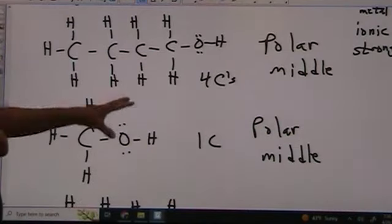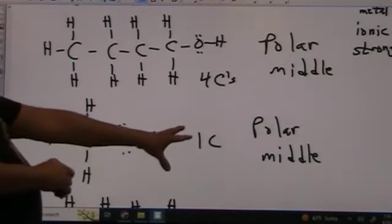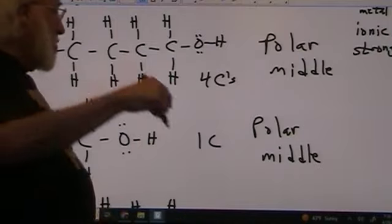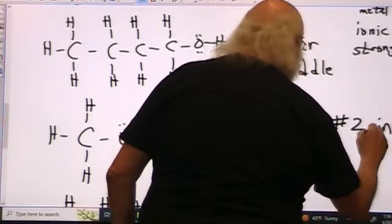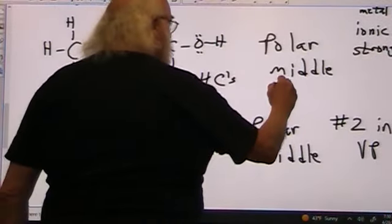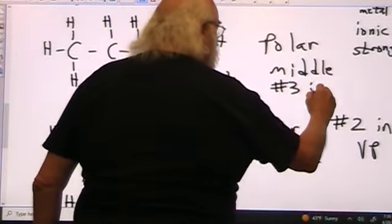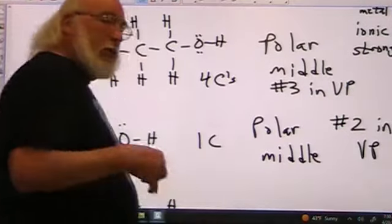So one carbon there. And since this is smaller, this is going to have the higher vapor pressure. So this is number two in vapor pressure. And that makes this then number three in vapor pressure. And that's how we go about doing that.